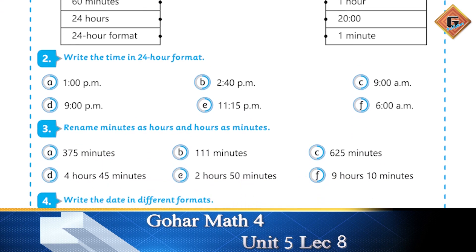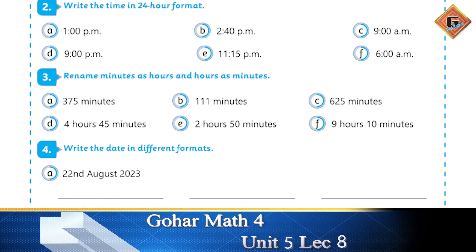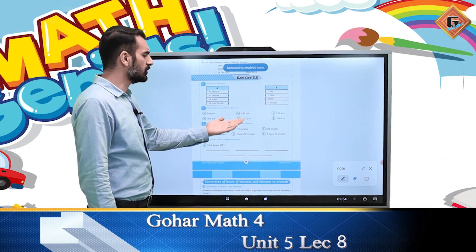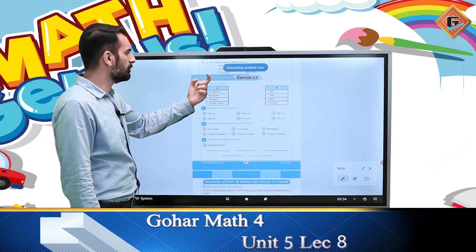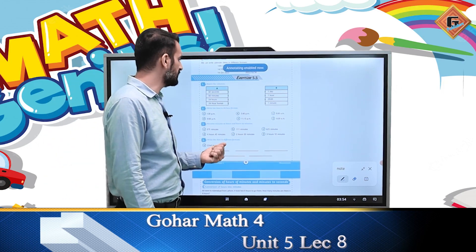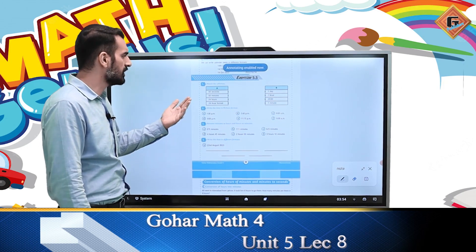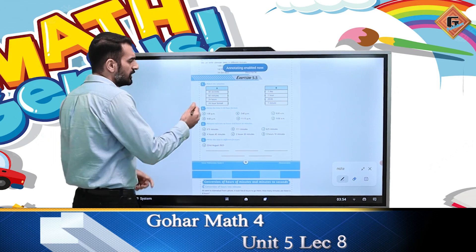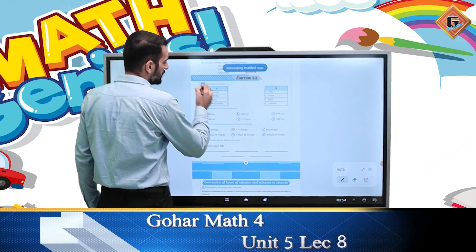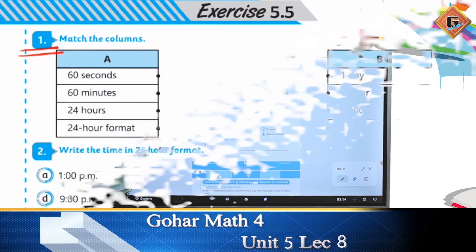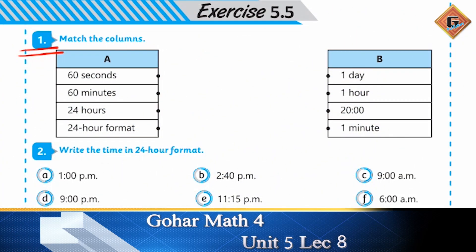तो चलते हैं exercise 5.5 की तरफ। इस exercise को solve करते हुए कुछ पिछले topics भी हम cover करेंगे, जिसमें conversions भी करेंगे। अब हम चलते हैं question 1 में — match the columns। अब हमें यह पता होना चाहिए।